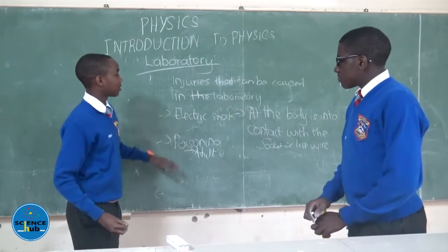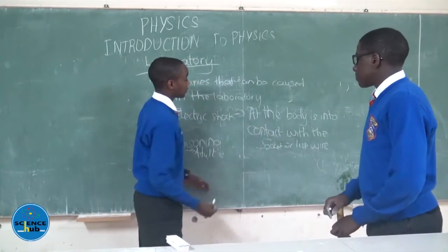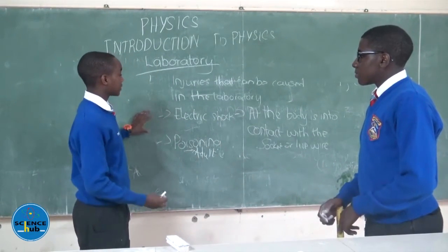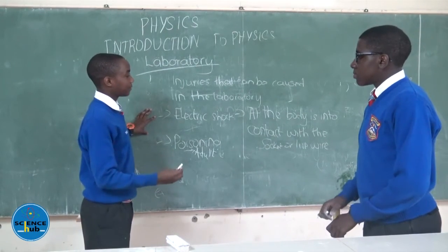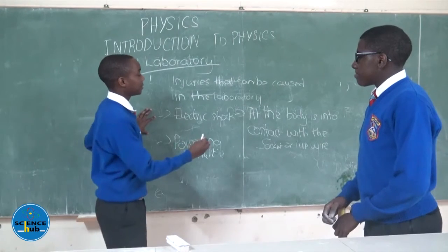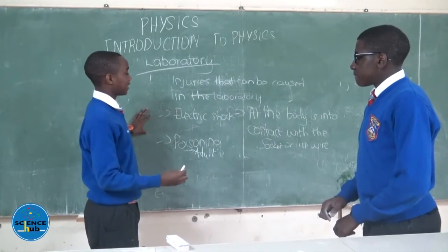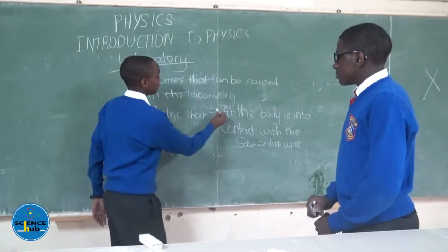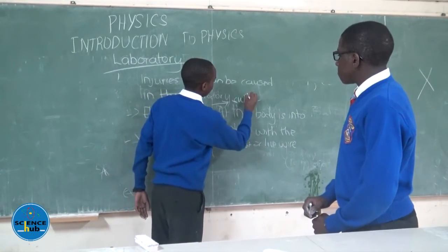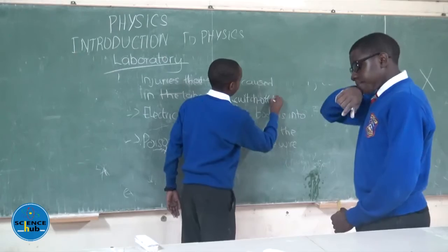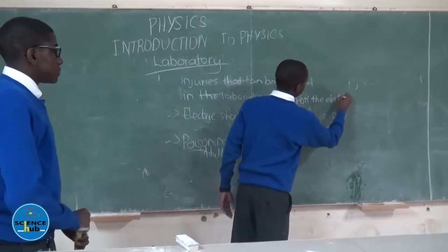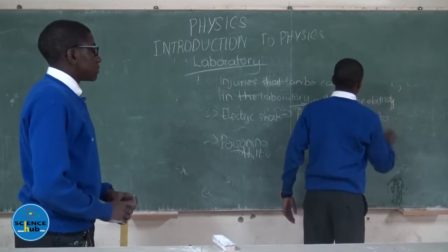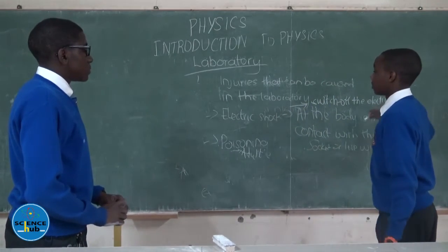One important thing to add about electric shock: before you remove the body from the object causing the shock, remember that electricity passes through blood, and blood contains water. If you touch the body directly, you can therefore transmit the electricity to yourself. So first, before removing the body, you should switch off the electricity that is causing the shock.